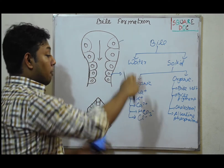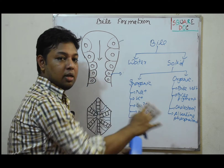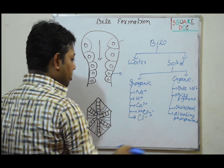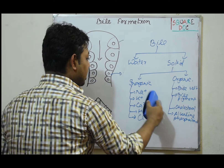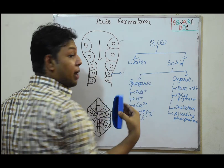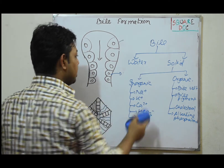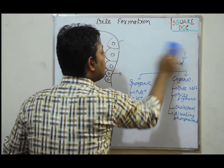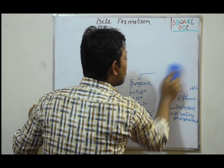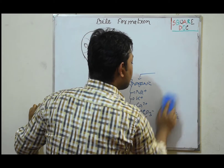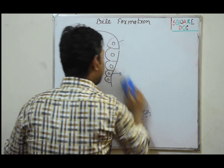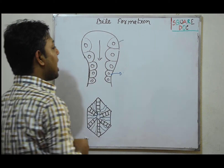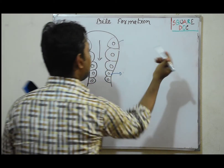These are the main ingredients of bile. The first component is bile salt. Bile salt is derived from bile acid.